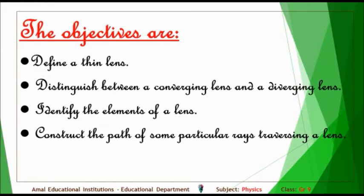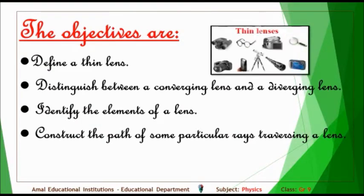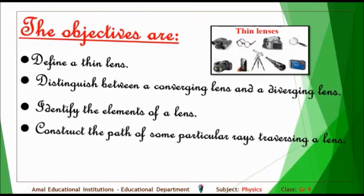The objectives of this chapter are: define a thin lens, distinguish between a converging lens and a diverging lens, identify the elements of a lens, and construct the path of some particular rays traversing a lens.